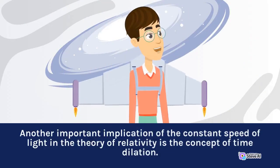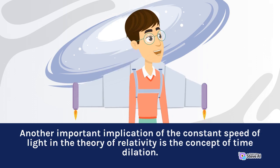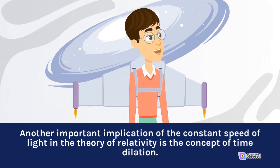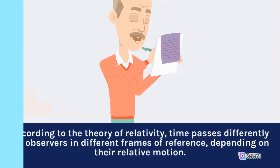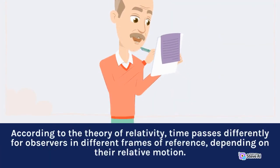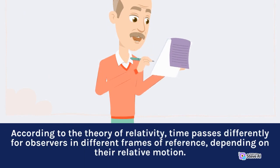Another important implication of the constant speed of light in the theory of relativity is the concept of time dilation. According to the theory of relativity, time passes differently for observers in different frames of reference, depending on their relative motion.